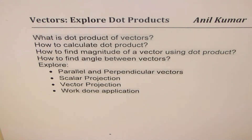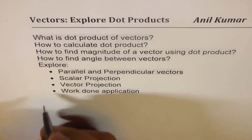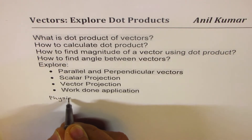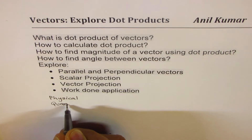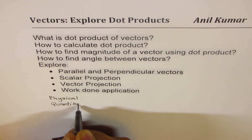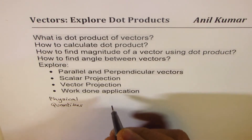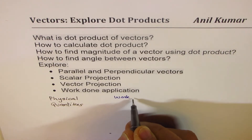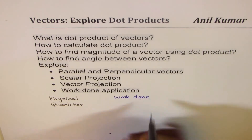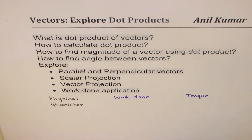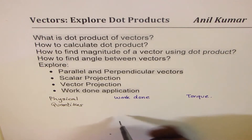To begin with, let us try to understand why we are studying dot products. That is a very common and genuine question. Normally we are explaining physical quantities, and two are very important: one is work done and the other is torque.